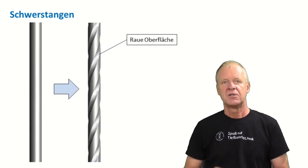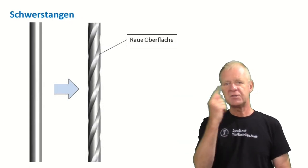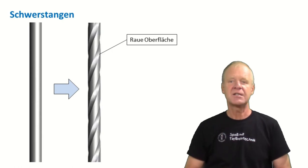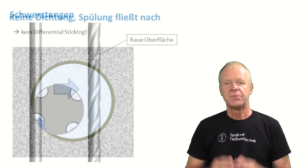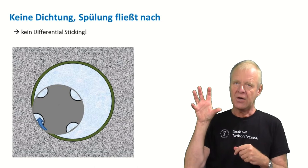In fact, typical drill collars are manufactured in such a way that there are spirals on the outer surface, as you can see in this picture. And these spirals make sure that some of the drilling mud can always flow through the backside of the drill string, even when it is leaning against the borehole wall.